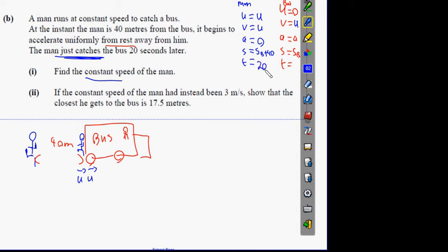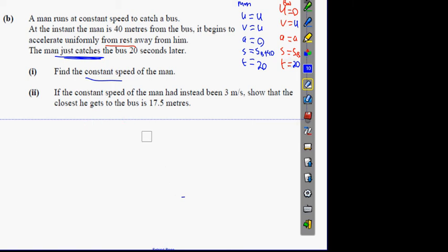Using all the variables at hand, which equation do you think we're going to pull out first? I'm thinking we could be looking at UT plus 1/2 AT squared. In fact, I'm pretty certain of it. We're going to start off with the man. S of the man, and what's the man's distance equal to again? SB plus 40, or the distance covered by the bus plus 40. UT plus 1/2 AT squared is going to be 20U. What's going to be a half A? It's going to be a half times 0 times 20 squared - no good. The man's distance is simply 20U.